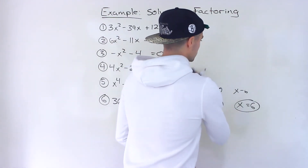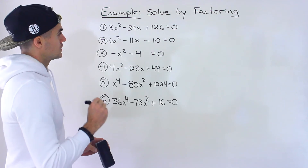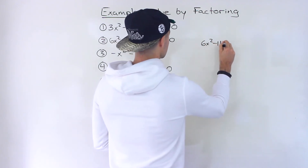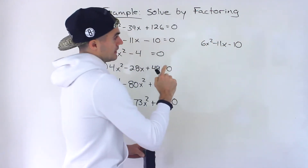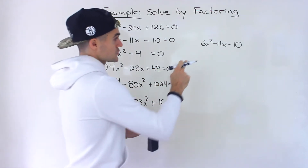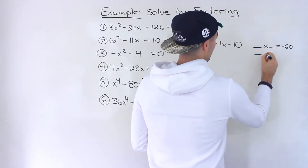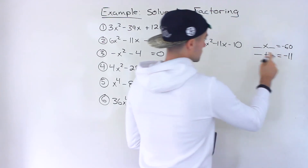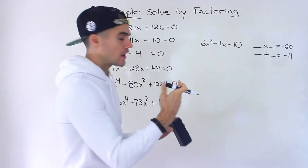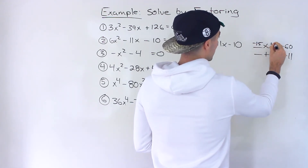Moving on to number two, we have 6x squared minus 11x minus 10 equals zero. I'm going to factor that left side: 6x squared minus 11x minus 10. We can't factor anything out initially, so we'll factor by decomposition. 6 times negative 10 gives us negative 60, and the b value is negative 11. We need two numbers that multiply to negative 60 and add up to negative 11. With a bit of trial and error, those two numbers are negative 15 and positive 4.